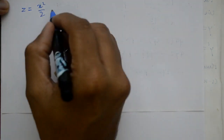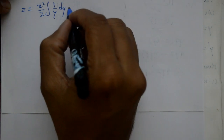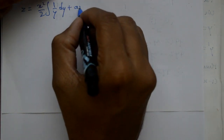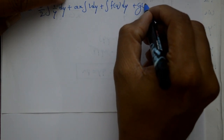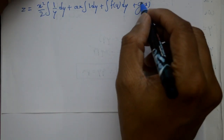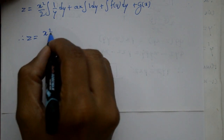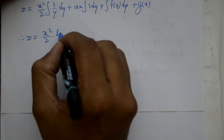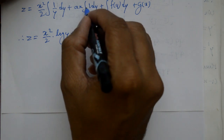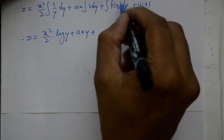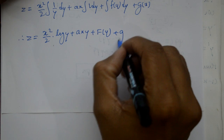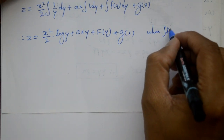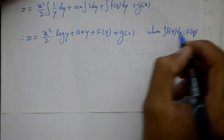z = (x²/2) · integration of (1/y) dy + ax · integration of 1 dy + integration of f(y) dy + g(x). So z = (x²/2) · log y + ax · y + F(y) + g(x), where F(y) is the integral of f(y) and g(x) is an arbitrary function of x. This is the required solution.